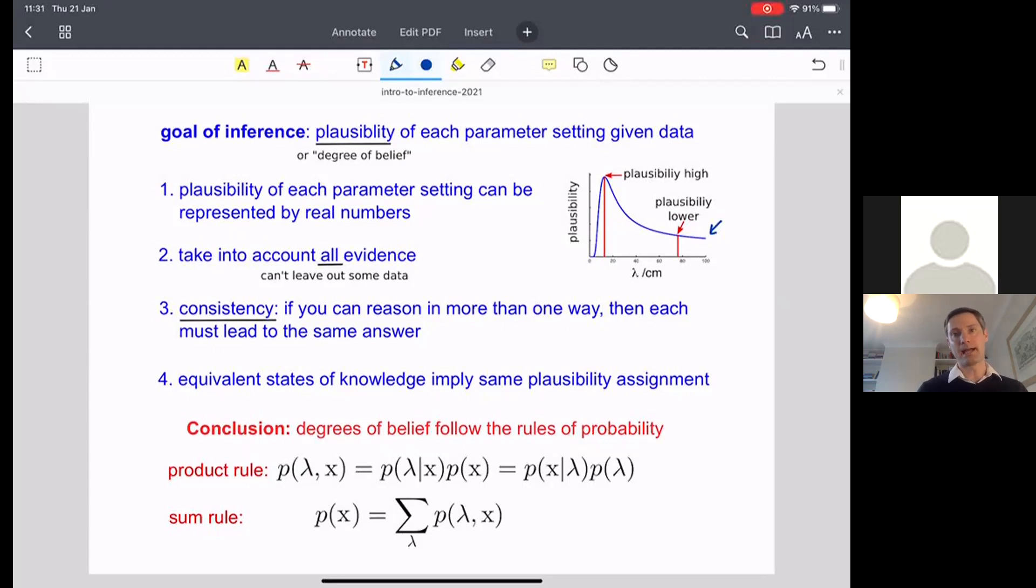And then the fourth axiom, which turns out to be important but relatively benign, is that equivalent states of knowledge imply the same plausibility assignment. So if two sets of data or a priori knowledge are the same, we should arrive at the same plausibility assignment for that setting of lambda. So this is really a technical condition that's required to get the proofs to go through.